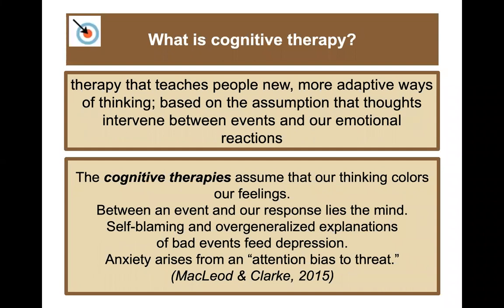Cognitive therapy, on the other hand, teaches people new, more adaptive ways of thinking. It's based on the assumption that thoughts intervene between events and our emotional reactions — the cognitive therapies assume that our thinking colors our feelings. Between an event and our response lies our mind. Self-blaming and overgeneralized explanations of bad events feed depression, and anxiety arises from an attentional bias toward threat.